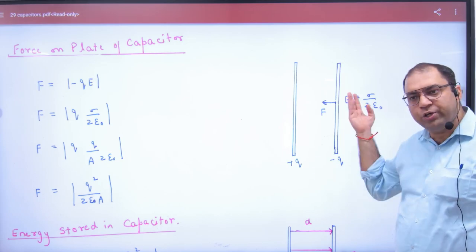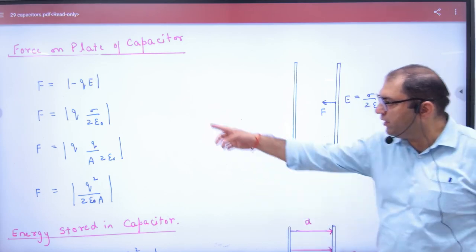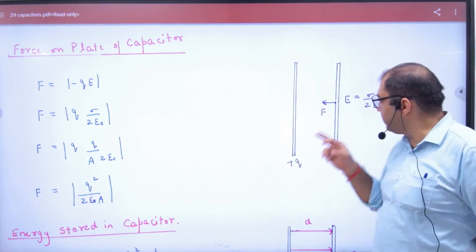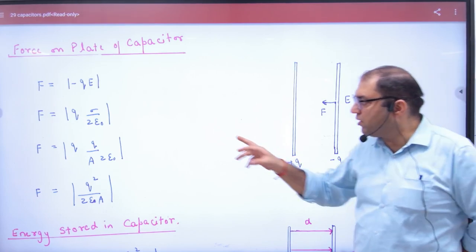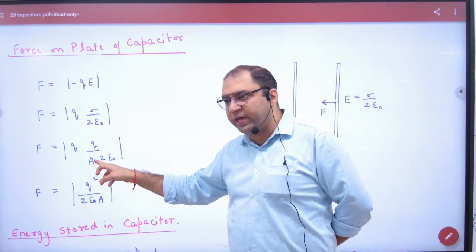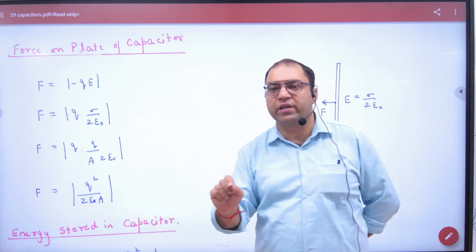Attractive force will be Q into E. Minus Q into E. E value is how much? Sigma by 2 epsilon naught. Sigma value is charge by area. What is the value put here? Force.